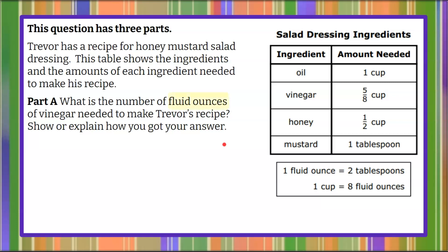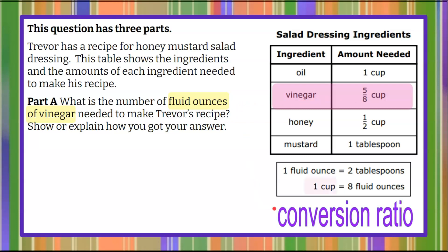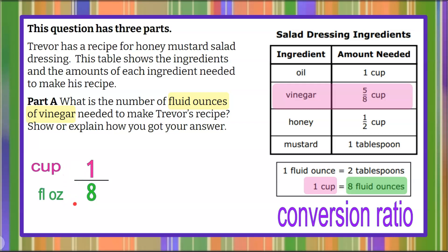Welcome back. For Part A of this three-part question, we want to know the number of fluid ounces of vinegar needed to make the recipe. We go to our ingredients and see that vinegar is listed as five-eighths of a cup, but we want to know it in fluid ounces. So we're going to look at the cups to fluid ounces conversion ratio and set it up as one to eight — one cup is eight fluid ounces.